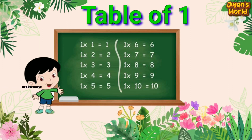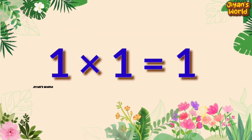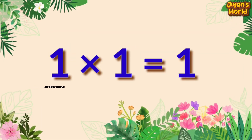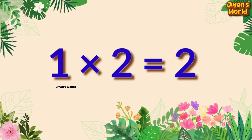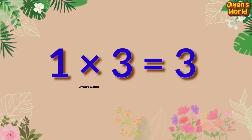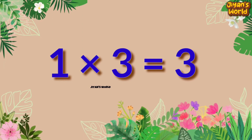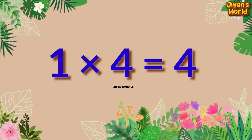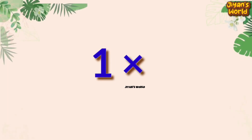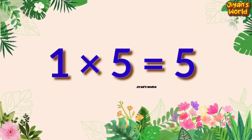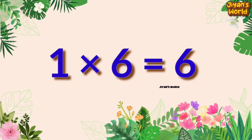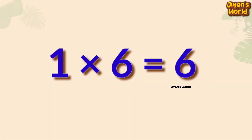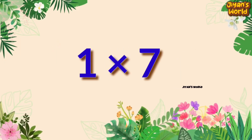So let's start. 1×1=1, 1×2=2, 1×3=3, 1×4=4, 1×5=5, 1×6=6, 1×7=7.